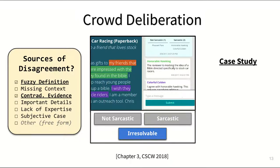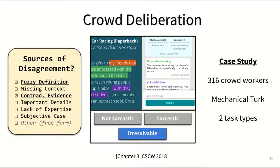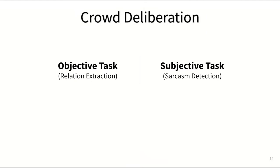With this interface and workflow, we conducted an observational case study with 316 crowd workers on Amazon's Mechanical Turk with two different types of text classification tasks — one objective task, where we had an expert-provided answer key available.